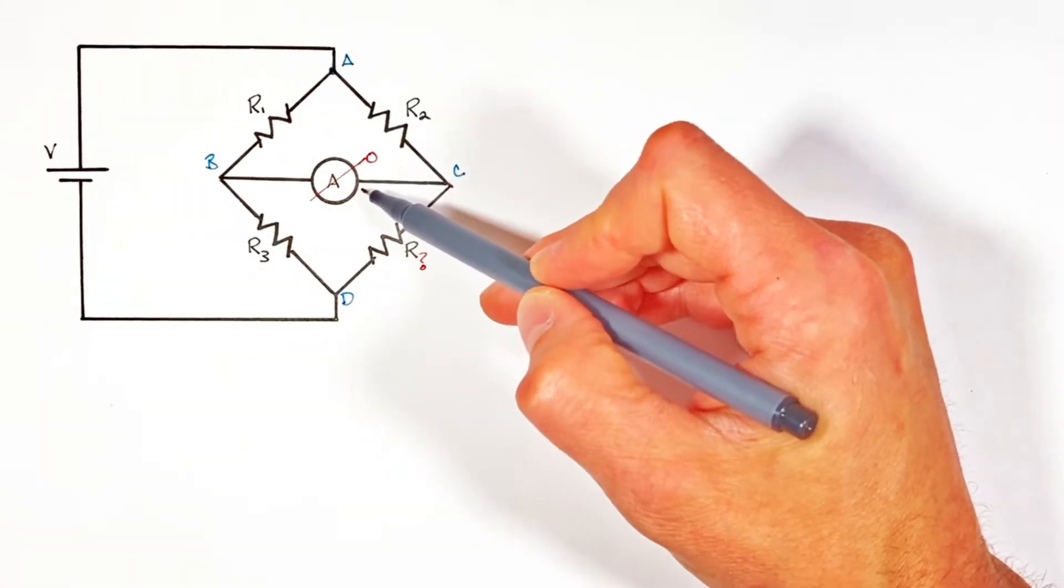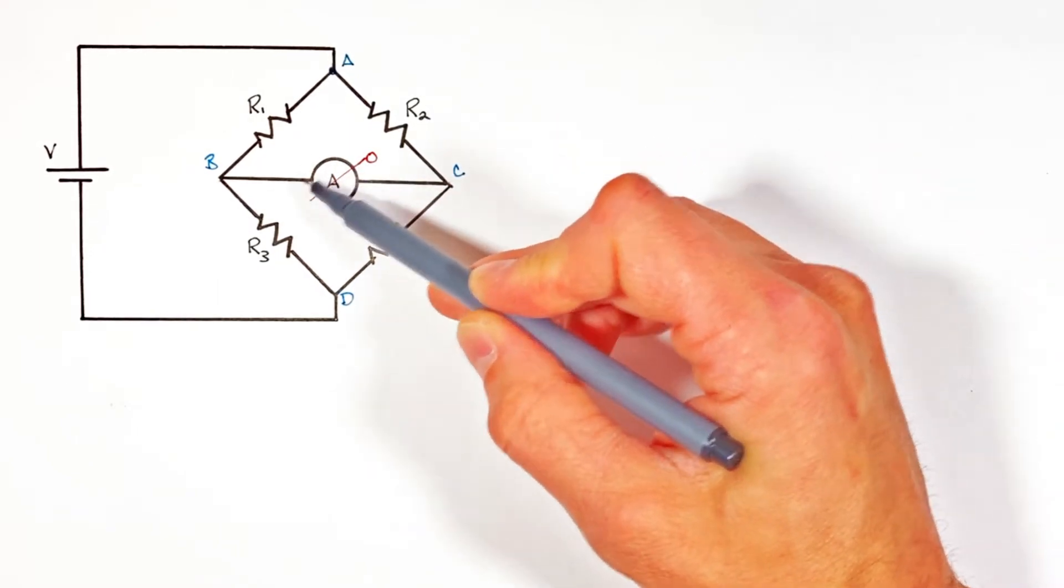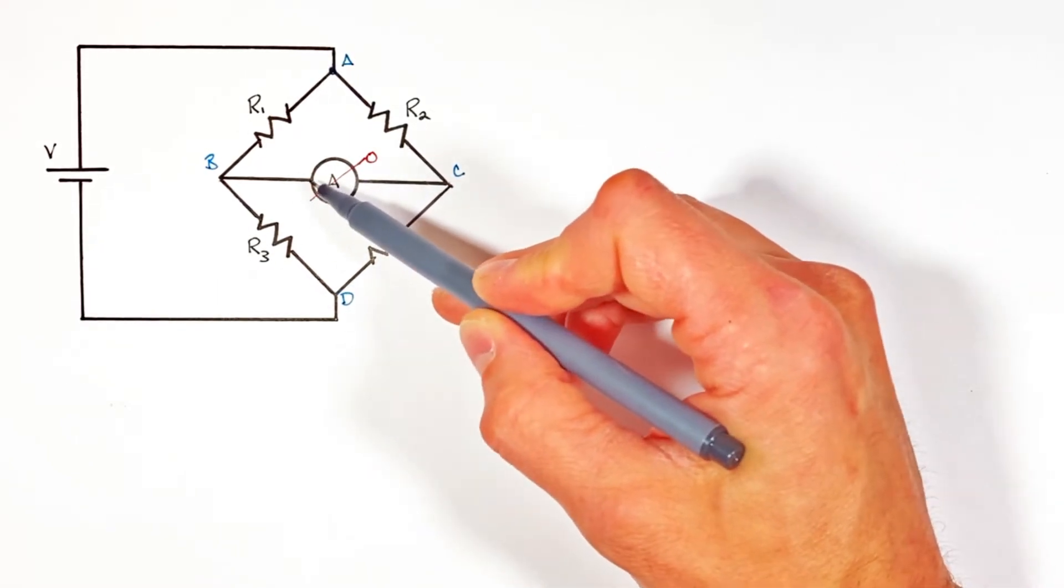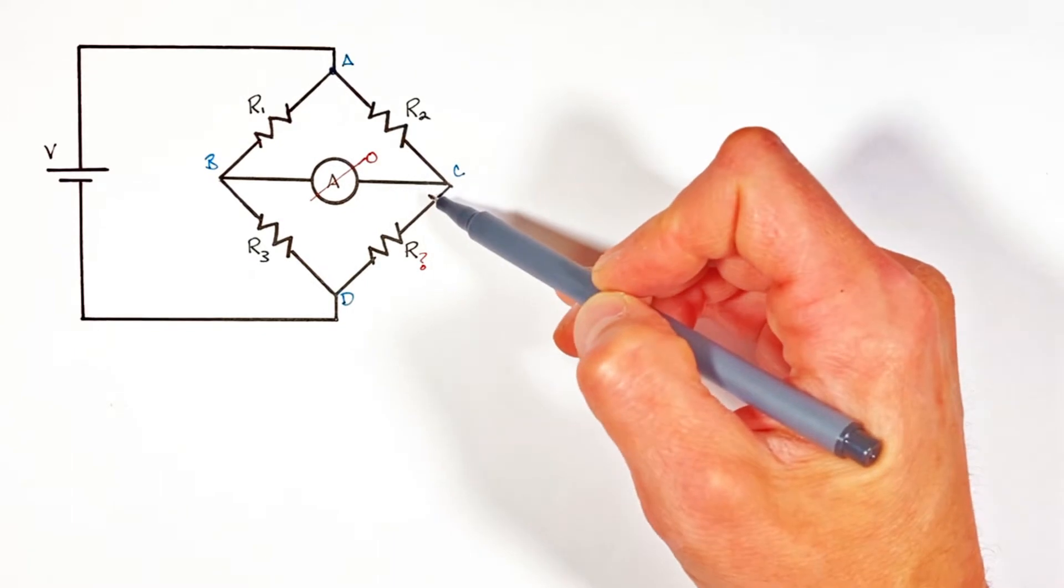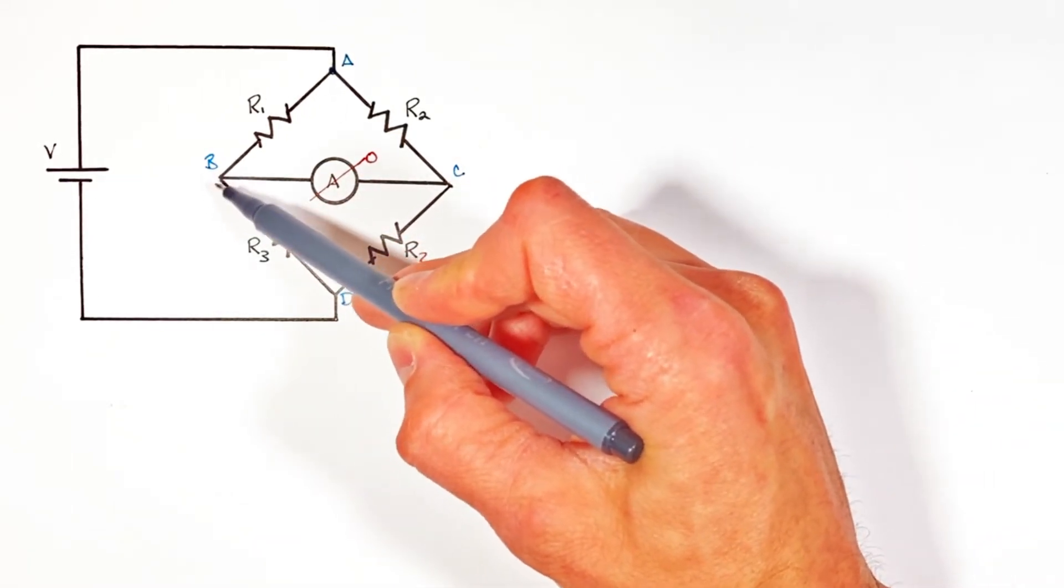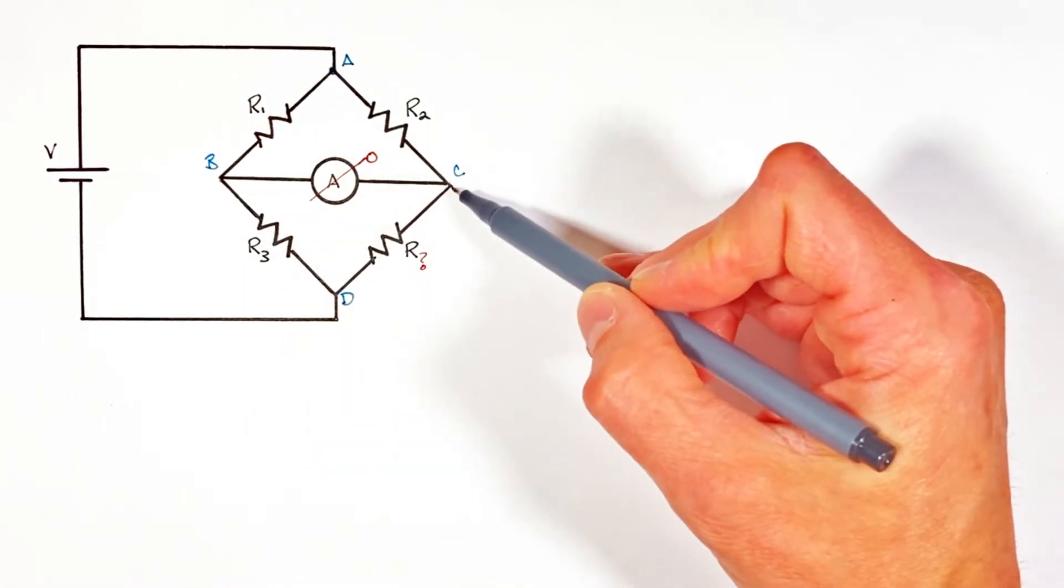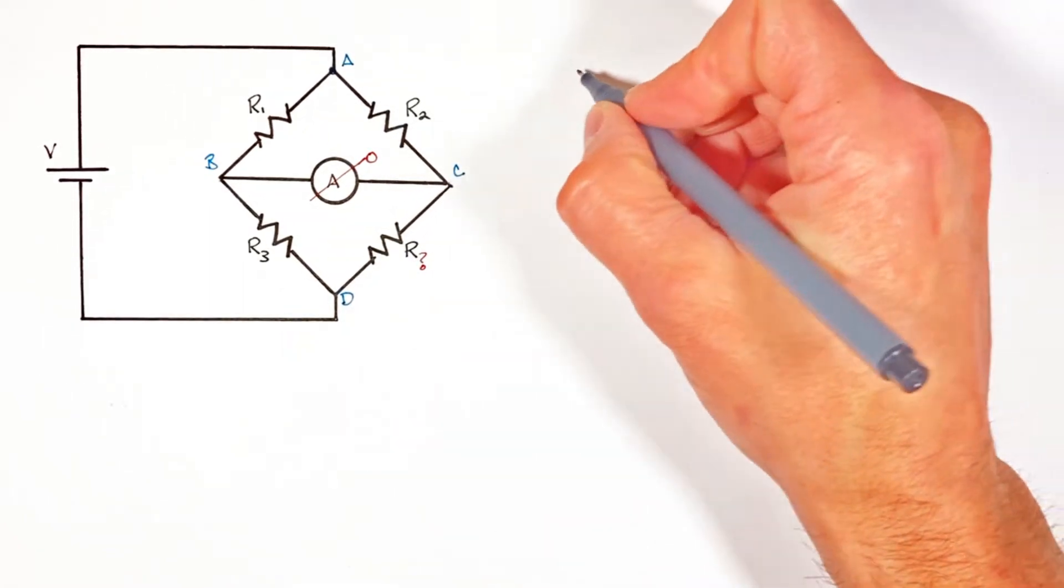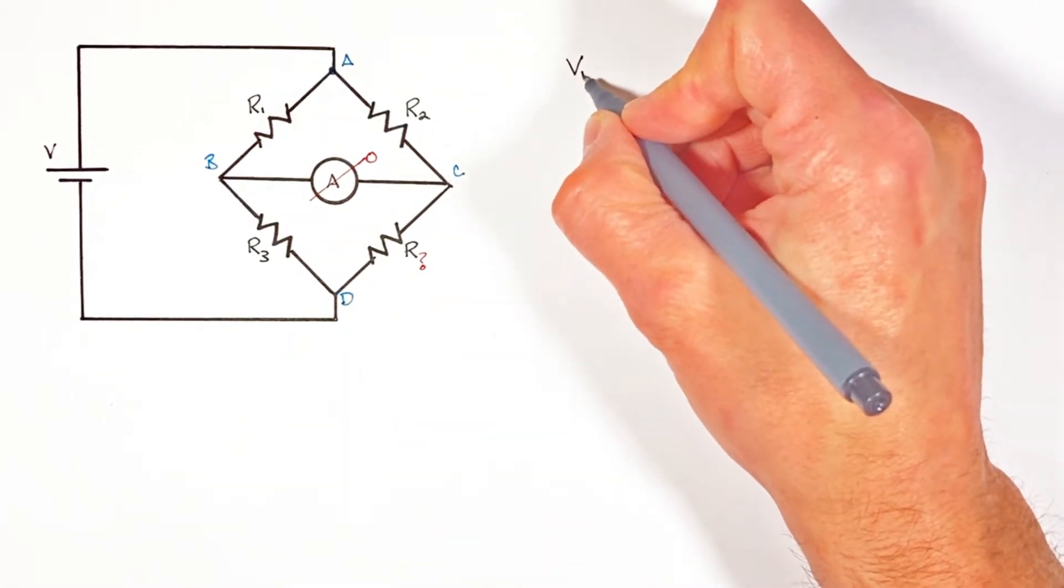Now the first important thing we need to recognize is that an ammeter has no resistance. It is effectively just a wire connecting two points. And so if this wire is connecting the left side of this bridge at point B to the right side at point C, immediately we know that the voltage at those two points is going to be the same.